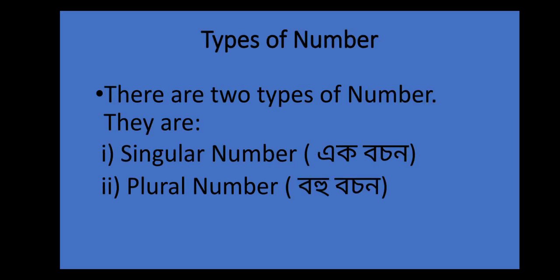How many types of number are there? There are two types of number. They are singular number and plural number.